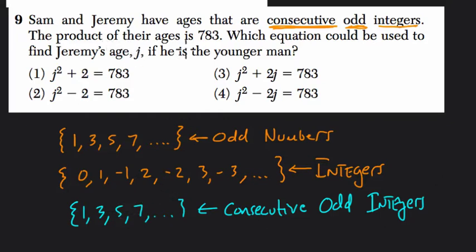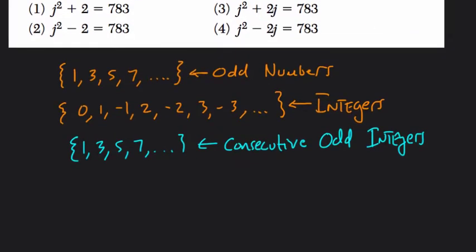So they want to know if the product of the ages of these two people is 783, which equation could be used to find Jeremy's age, J, if he's the younger man. So let's just assume for a moment Jeremy is 5 years old. And if this is Jeremy, the next number is the other person, 7. And you want to think of that in terms of J, because you want to minimize the number of variables. I'm going to call it whatever Jeremy is, plus 2. So notice consecutive odd integers are all 2 apart from each other.